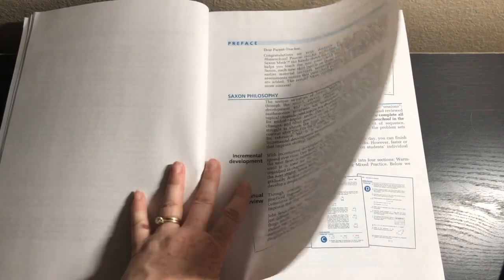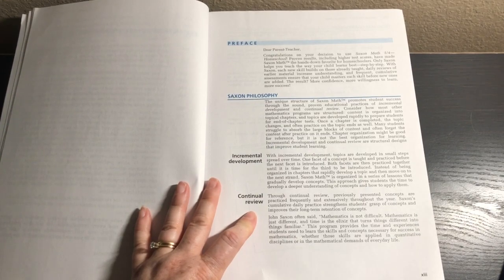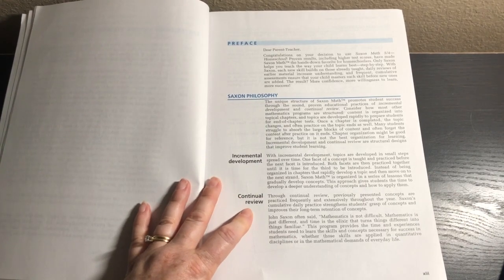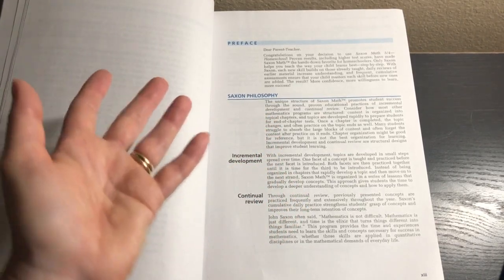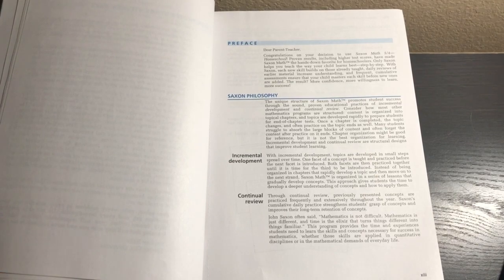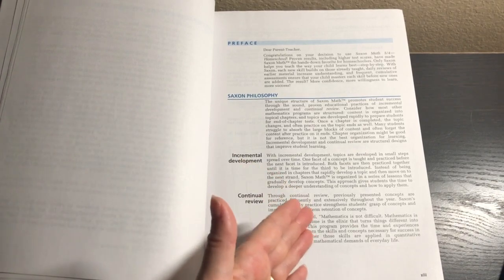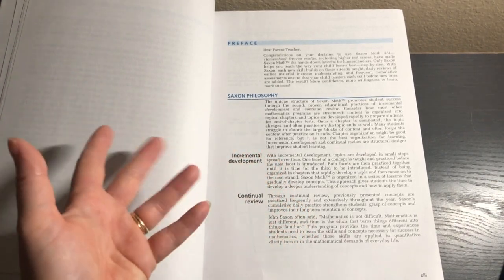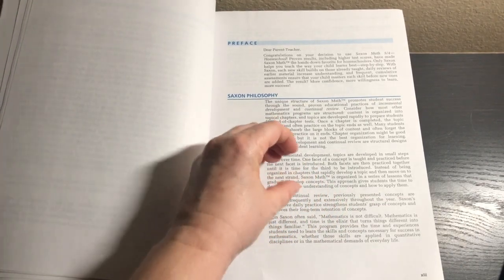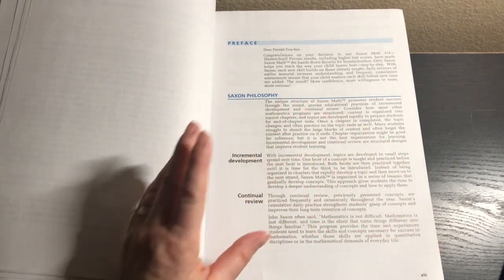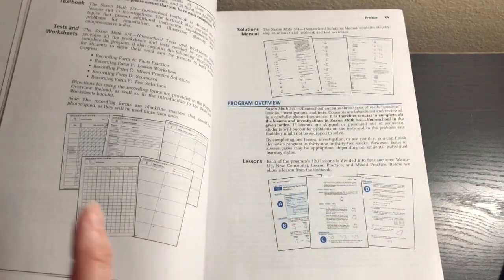The Saxon philosophy is incremental development with continual review. People would say this is a spiral program, but they say it's an incremental program with continual review. Concepts are taught in little bits and pieces and added on more to each lesson, and then there's a continual review throughout every lesson. It's like little steps to build up and then at the same time reviewing everything you learned up to that point.